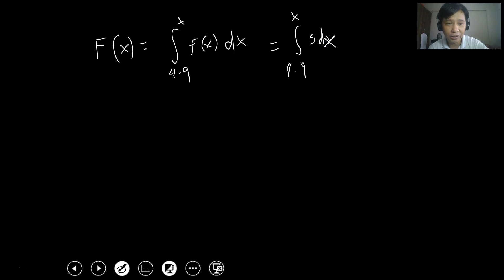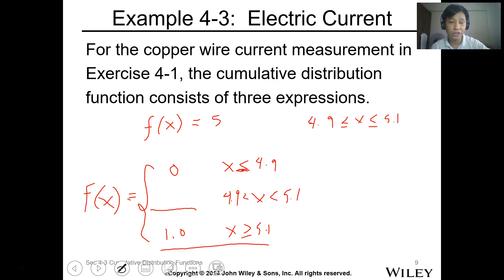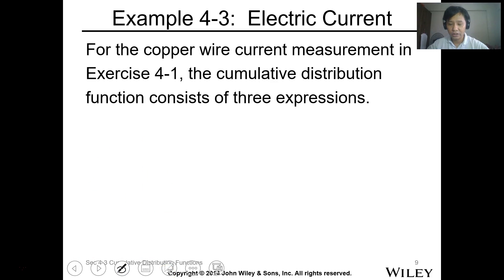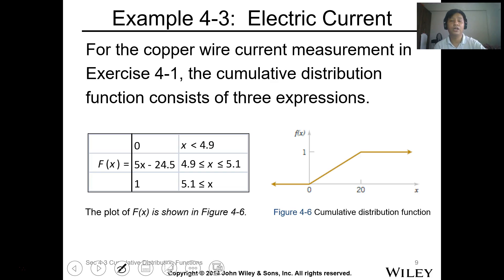So pag inintegrate natin, that will be 5X evaluated from 4.9 to X. So by evaluation, this is 5X minus 5 times 4.9. So the value will be 5X minus 24.5.